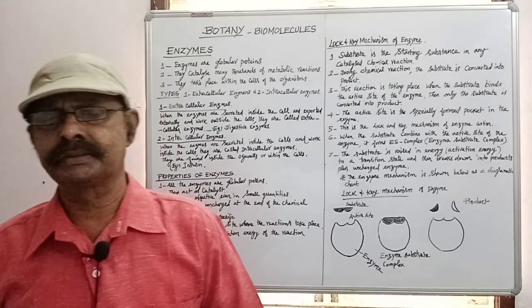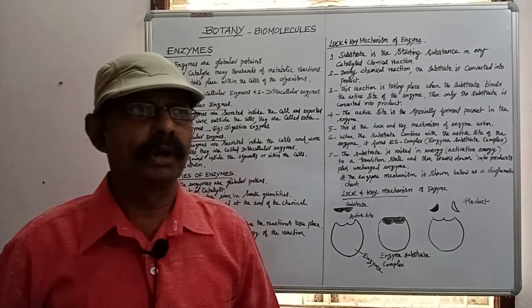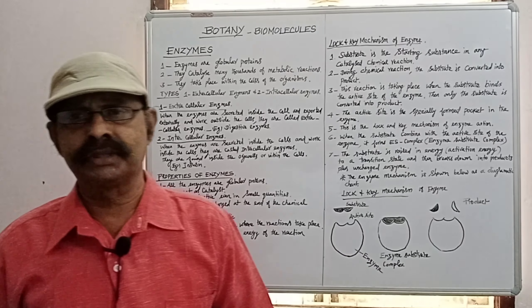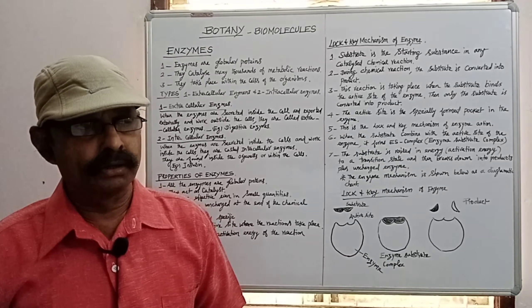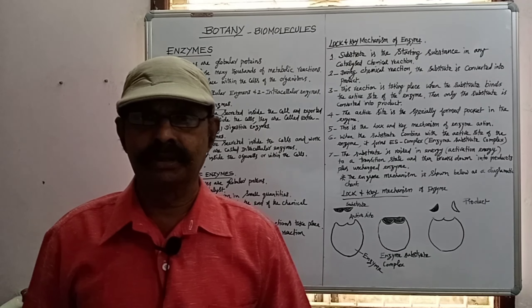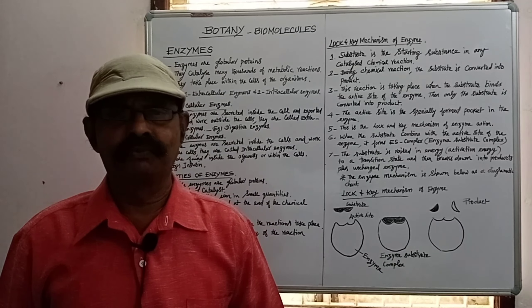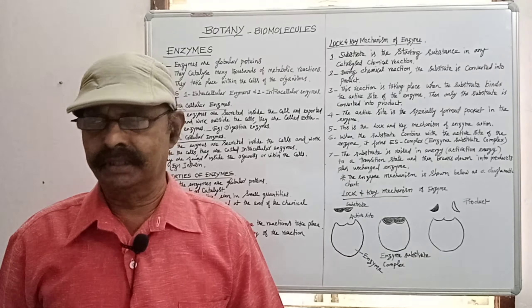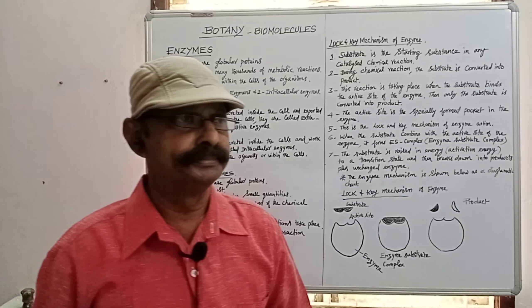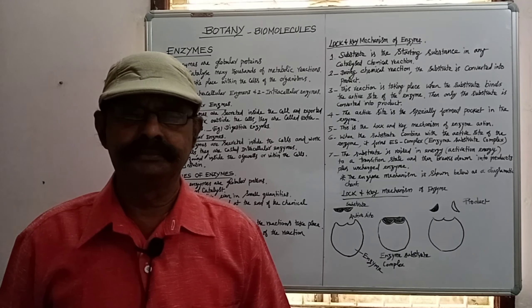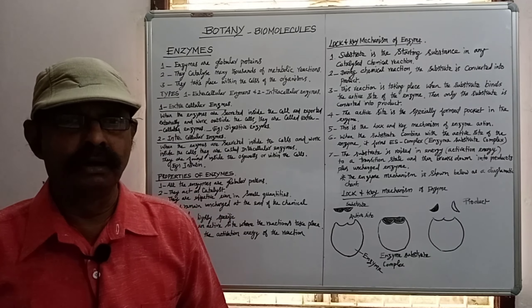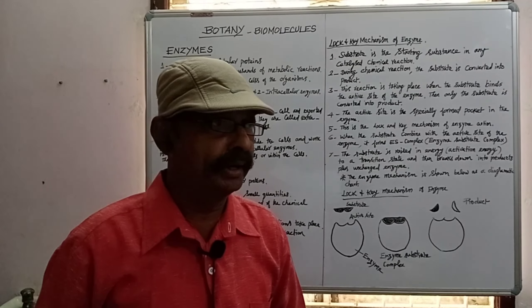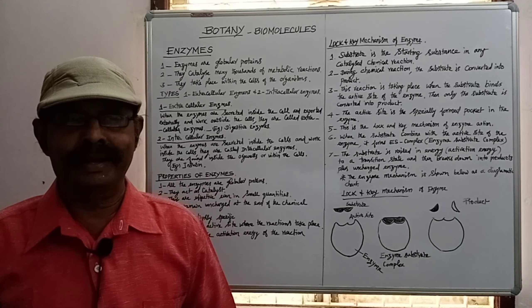The second type is intracellular enzyme. When the enzymes are secreted inside the cells and work inside the cells, they are called intracellular enzymes. They are found inside the organs or within the cells. For example, insulin is an intracellular enzyme secreted by the pancreatic glands.